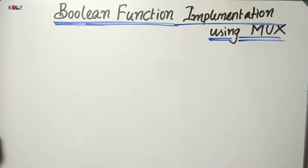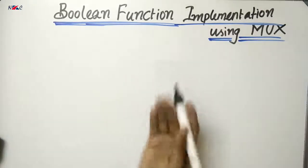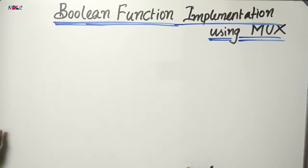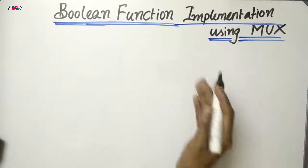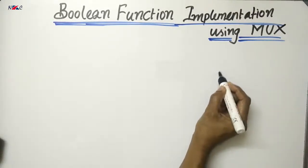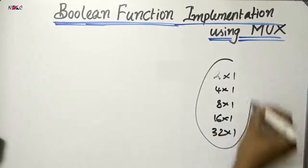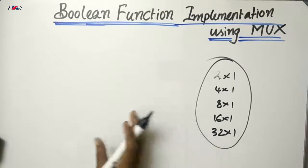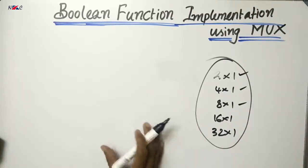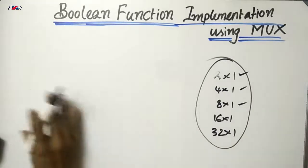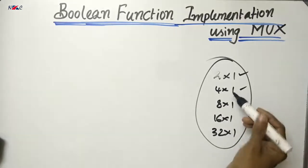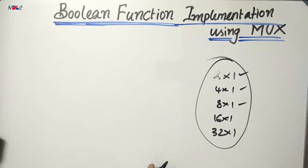Hi everyone, welcome to Logic System Designed by Ninu. In the last classes we mentioned that we can implement combinational circuits by using multiplexers. Boolean functions can be implemented using multiplexers. We already have gates — AND, OR, NOT — available, and we are implementing these boolean functions using multiplexers, because multiplexer ICs — usually 2-by-1, 4-by-1, 8-by-1, 16-by-1, or 32-by-1 — are already available. If we implement the combinational circuit using these ICs, we can reduce the number of logic gates and the connecting wires.